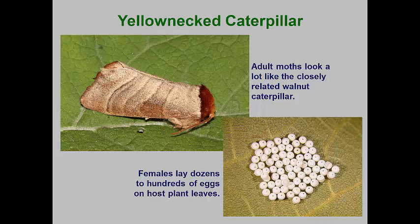A common landscape tree defoliator is the yellow neck caterpillar. This pest will lay eggs on many different tree leaves, but oaks and birches are favored hosts. The adult moths fly in June and July and are reddish brown in color with a distinctive brown patch at the head and pronotum area. Adults mate at night and females fly about to find host plants.